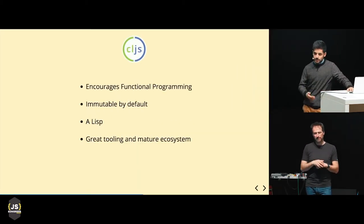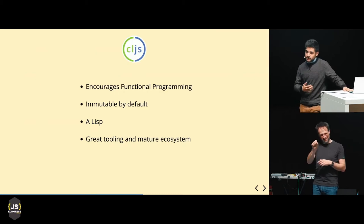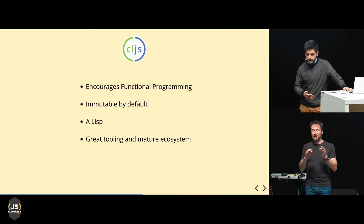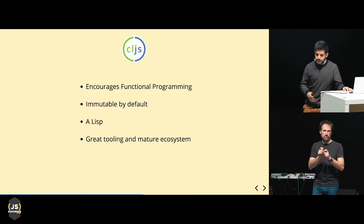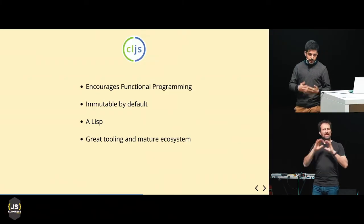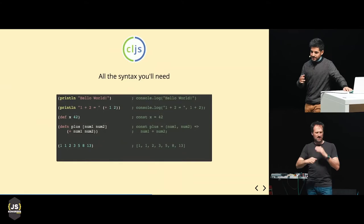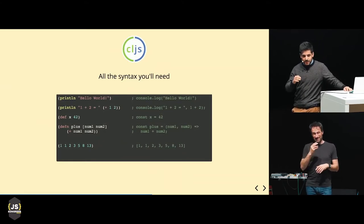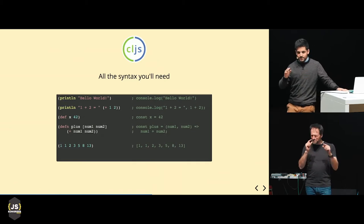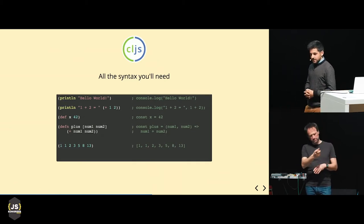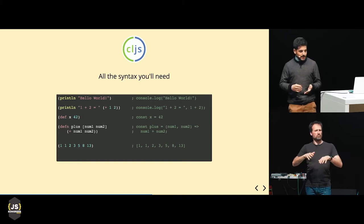The first is ClojureScript, a language that encourages functional programming. It has immutable data structures by default with opt-in mutability. It is a dialect of Lisp, it has great tooling, and it's been battle-tested for years on the server side. It compiles both to JavaScript and JVM bytecode, so it's really fast. One of the remarkable things about Clojure is that it has really minimal syntax — this is basically all you need to know to start writing the language.